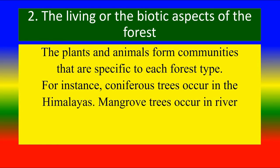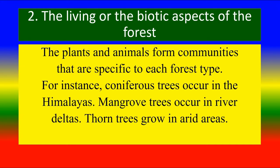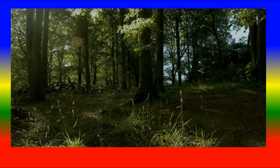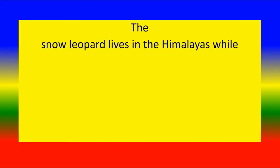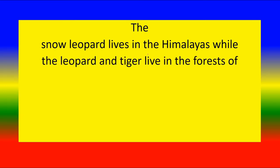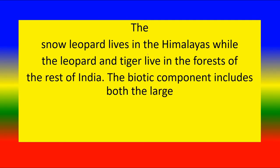Different forest types include those in the Himalayas, mangrove trees found in river deltas, and thorn trees that grow in arid areas. Look at this picture. The snow leopard lives in the Himalayas, while the leopard and the tiger live in the forests of the rest of India.